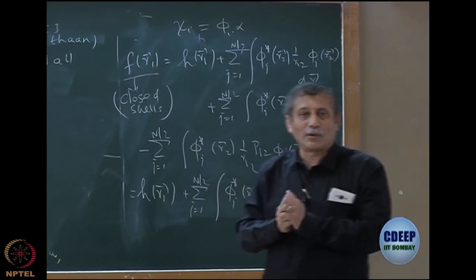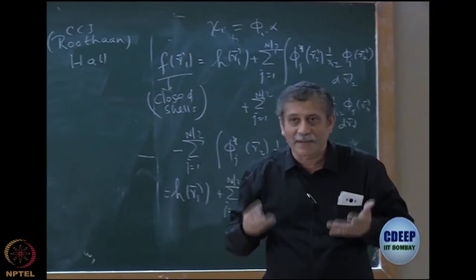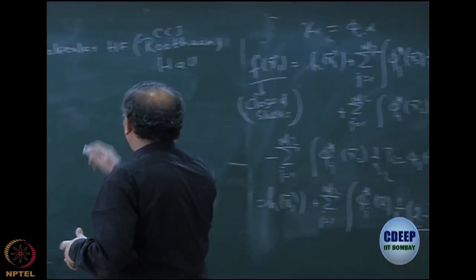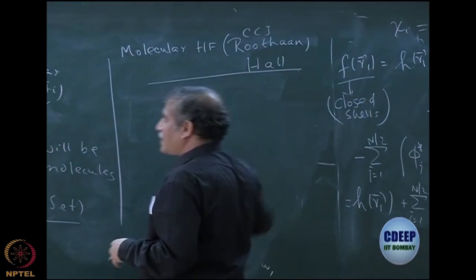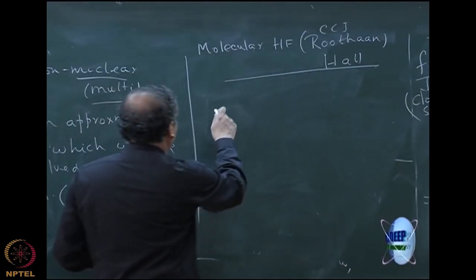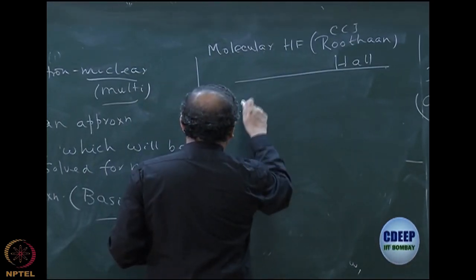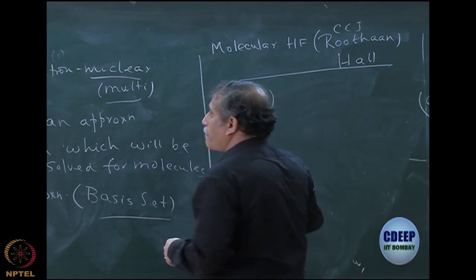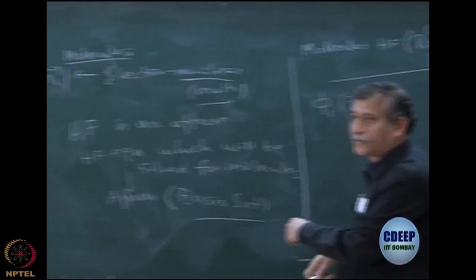It is very important to know the history, how Pople and Nesbet came in the 1960s. So let us go to Roothaan equation with that. What Roothaan proposed is that since I cannot solve this, let me expand this phi i of r1 as a linear combination of basis.